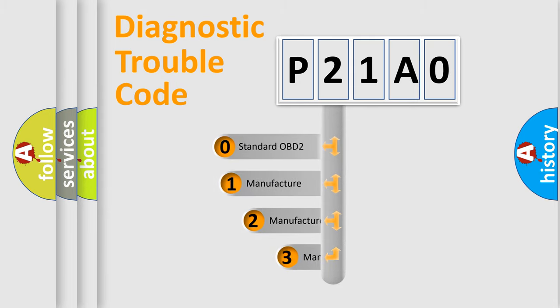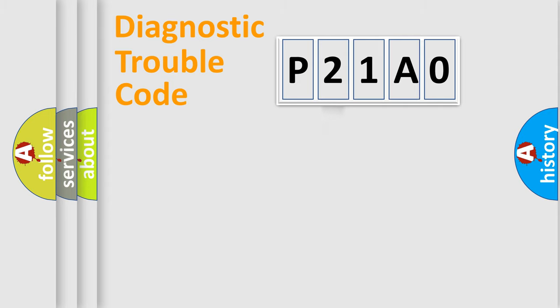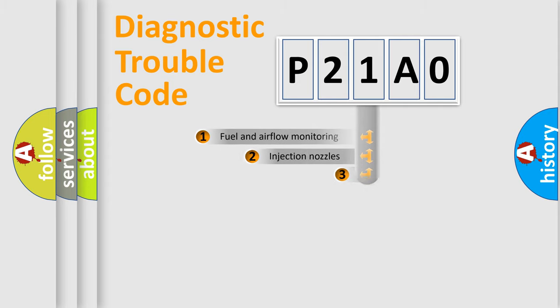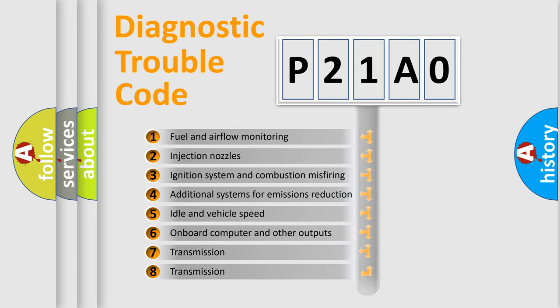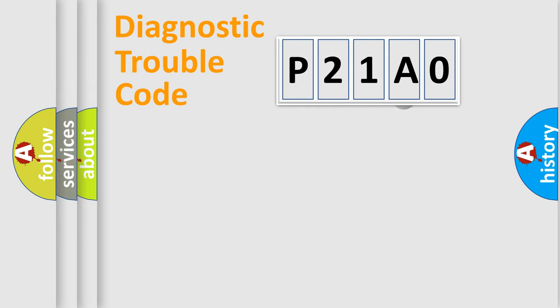If the second character is expressed as zero, it is a standardized error. In the case of numbers 1, 2, or 3, it is a more precise expression of a car-specific error. The third character specifies a subset of errors. The distribution shown is valid only for the standardized DTC code.